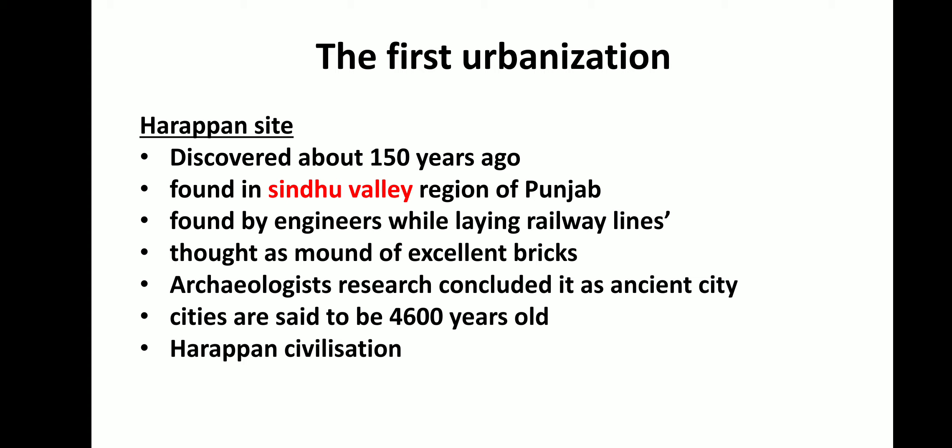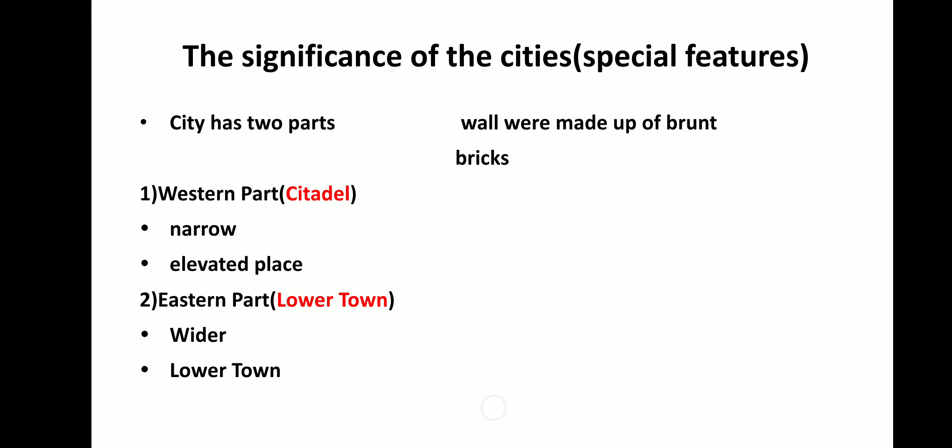Let's see the first urbanization — the Harappan site. This site was discovered about 150 years ago by engineers while laying railway lines, who thought it was a mound of excellent bricks. It was found in the Sindhu Valley region of Punjab, which is in present-day Pakistan. Archaeologists did research and concluded it was an ancient city. These cities are said to be 4,600 years old. Since Harappan was the first site to be discovered, it is called the Harappan Civilization.